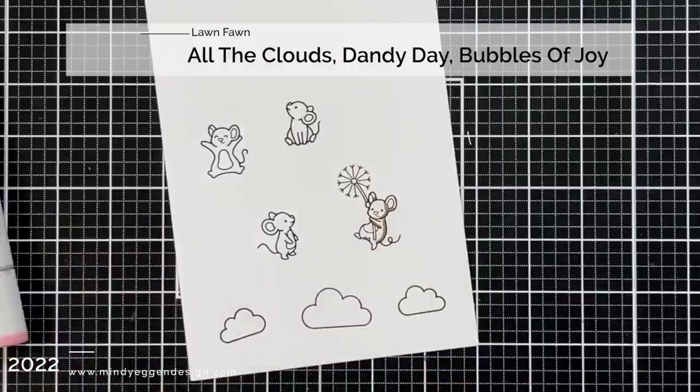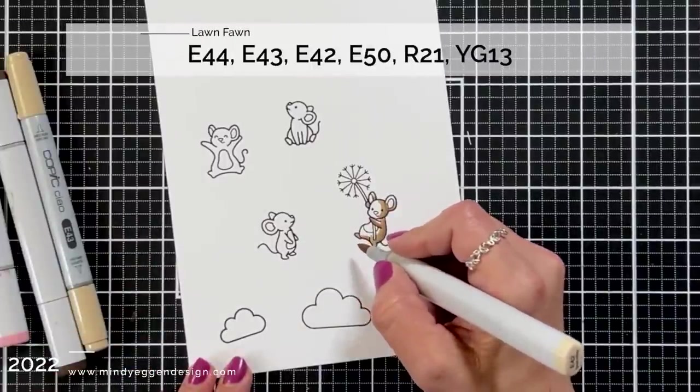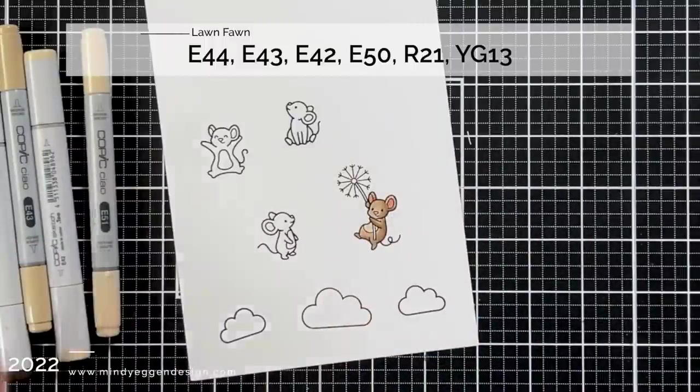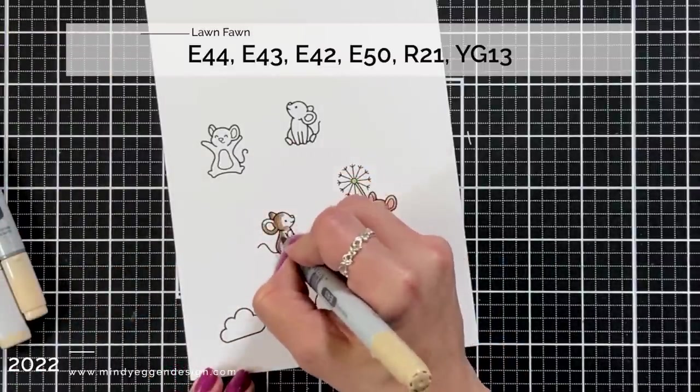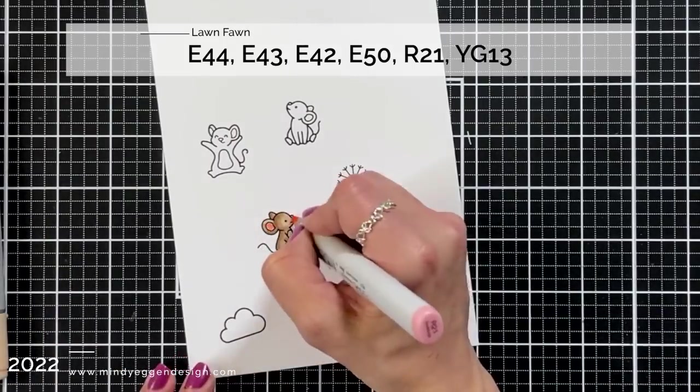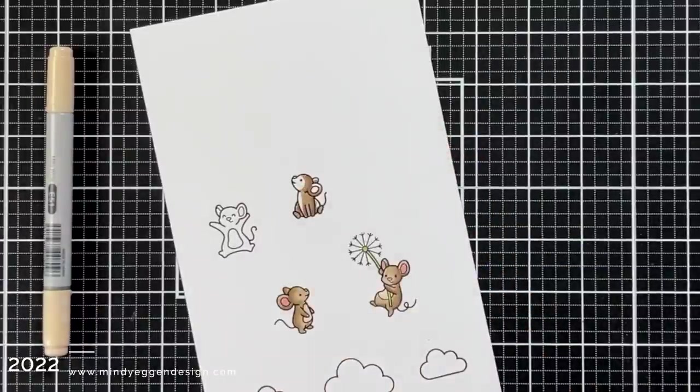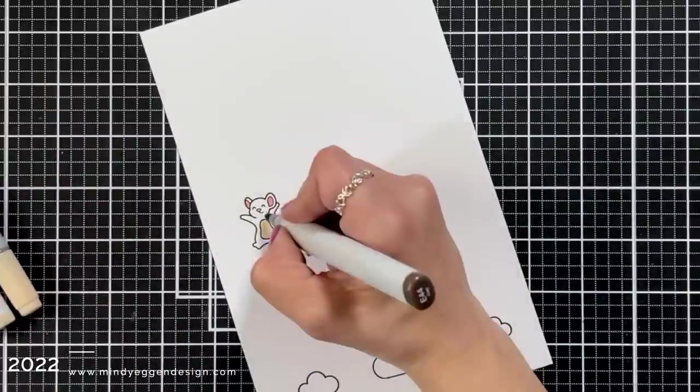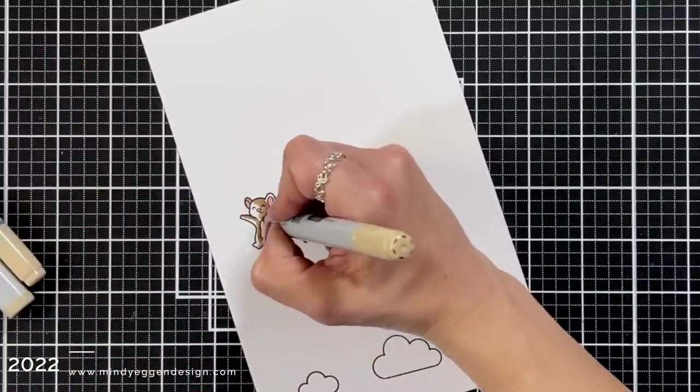Now I couldn't resist adding some of these cute little mice to my scene so I have some mice from Dandy Day and Bubbles with Joy and then I also have some clouds here from All the Clouds stamp set. I also have a mouse on here from You Autumn Know I believe is the stamp set but I didn't end up using him. So I'm coloring these with Copic marker. I had stamped them out on 80 pound white cardstock with Jet Black ink and I'm using E44, 43, and 42 to color the body of my mice and then I have E50 for the belly and I did R21 for the nose and the ears and I did a YG13 for my little dandelion which I thought was a really cute fit to go with my basket of flowers. I didn't do any coloring to the clouds. I just left them completely plain white but you could add a little bit of blue shading towards the bottom if you wanted to add some color to those.